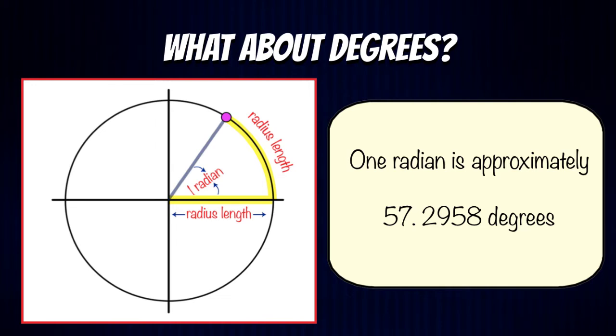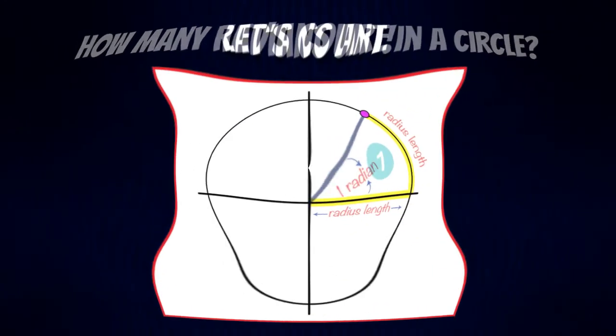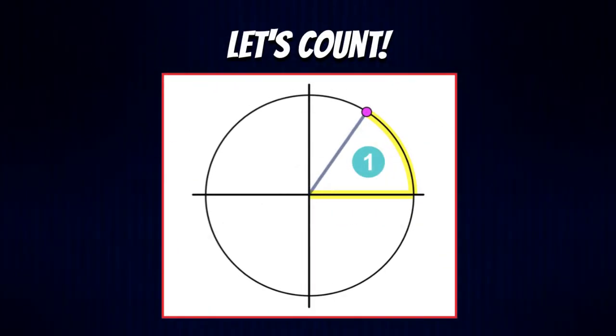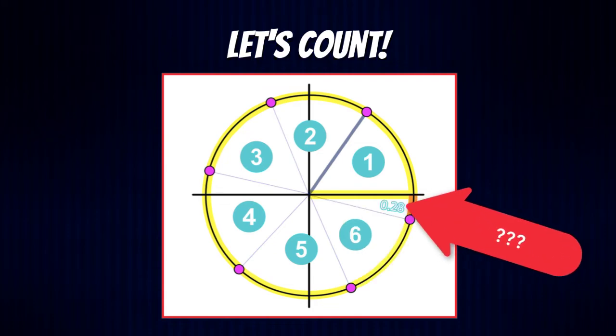When we're working inside circles, we want to start getting used to thinking about angles as radians. So how many radians are there? Let's count: one, two, three, four, five, six. But when we get to six, we see we have a little bit left over.